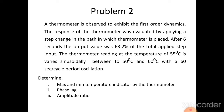Problem 2: A thermometer is observed to exhibit first order dynamics. The response was evaluated by applying a step change in the bath in which the thermometer is placed. After 6 seconds, the output value was 63.2% of the total applied step input. The thermometer reading at 55 degrees centigrade varies sinusoidally between 50 degrees centigrade and 60 degrees centigrade with a period of 60 seconds per cycle. Determine the maximum and minimum temperature indicated by the thermometer, the phase lag, and the amplitude ratio.